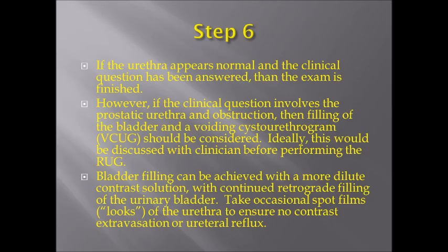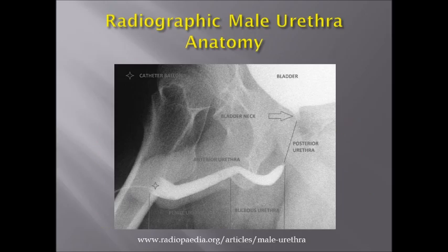Step 6: If the urethra appears normal and the clinical question is answered, the examination is finished. However, if the question involves the prostatic urethra and obstruction, filling of the bladder and a voiding cystourethrogram should be considered. This should optimally be discussed with the clinician prior to beginning the retrograde urethrogram. Bladder filling can be achieved by switching contrast to a more dilute solution and continuing to infuse through the urethral catheter. During bladder filling, use fluoroscopy intermittently to ensure extravasation is not occurring and to observe for ureteral reflux.